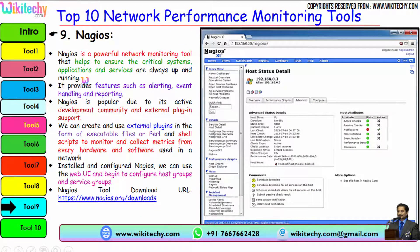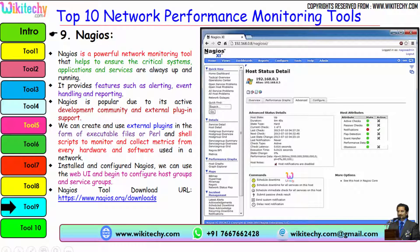The rank 9 tool is Nagios. It is a powerful network monitoring tool that helps ensure critical systems, applications and services are always up and running. It provides features such as alerting, event handling and reporting. Nagios is popular due to its active development community and external plugin support. We can create and use external plugins in the form of executable files or Perl and shell scripts to monitor and collect metrics from every hardware and software used in the network. Once you install and configure Nagios, you can use the web UI to configure host groups and service groups. Here is the download URL for the Nagios tool.